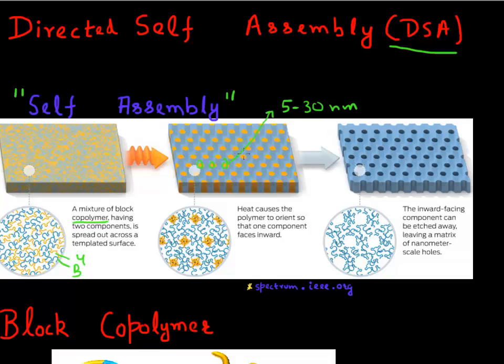And then you could selectively etch out one of the polymers. In this case, you can remove this yellow polymer to leave these stencils of holes.